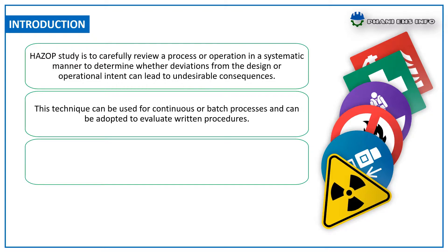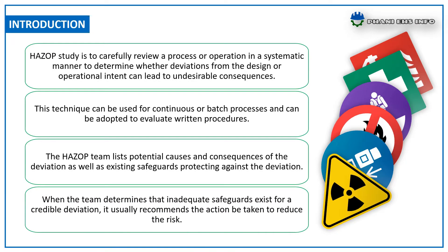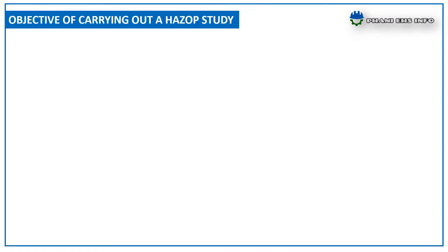The technique can also be adopted to evaluate written procedures. The hazard team lists potential causes and consequences of the deviations, as well as existing safeguards protecting against the deviations. When the team determines that inadequate safeguards exist for a credible deviation, it usually recommends actions to be taken to reduce the risk.